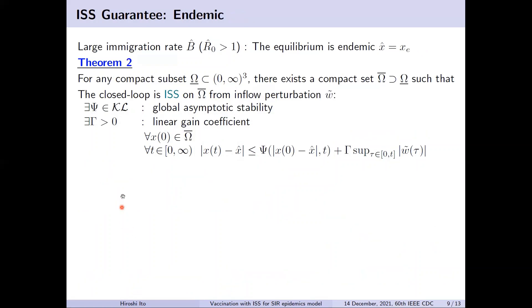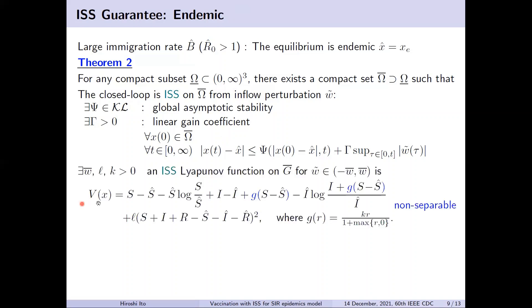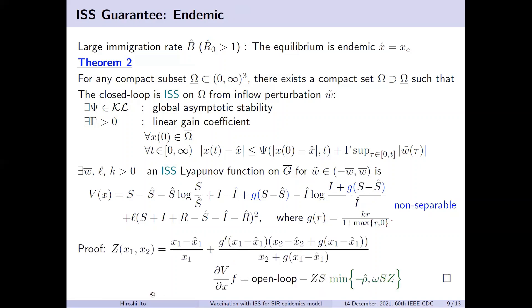You achieve the same ISS property in the case of the endemic equilibrium. Since the disease-free equilibrium becomes a saddle point, we cannot include the zero state in the domain of stability; hence, we consider any compact set excluding zero. This endemic case is harder, but the key is the use of the non-decoupled Lyapunov function with the cross-term as explained earlier. The sketch of proof shows that the control rho in green again puts a negative term in the derivative of the Lyapunov function.